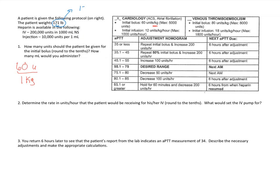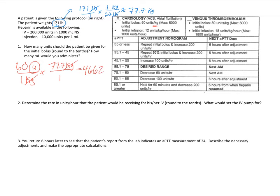The patient's weight is 171 pounds, which I need to convert into kilograms. I know there are 2.2 pounds in every one kilogram, so dividing gives approximately 77.7 kilograms. If the patient is to receive 60 units per kilogram, I multiply 60 by 77.7. The kilograms cancel out and we get 4,662 units — the total number of units for the initial bolus.